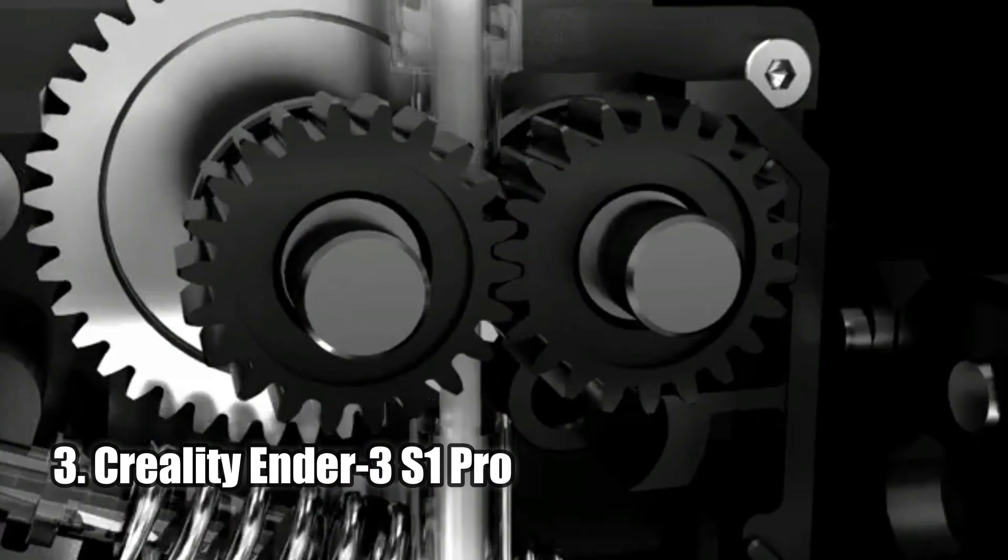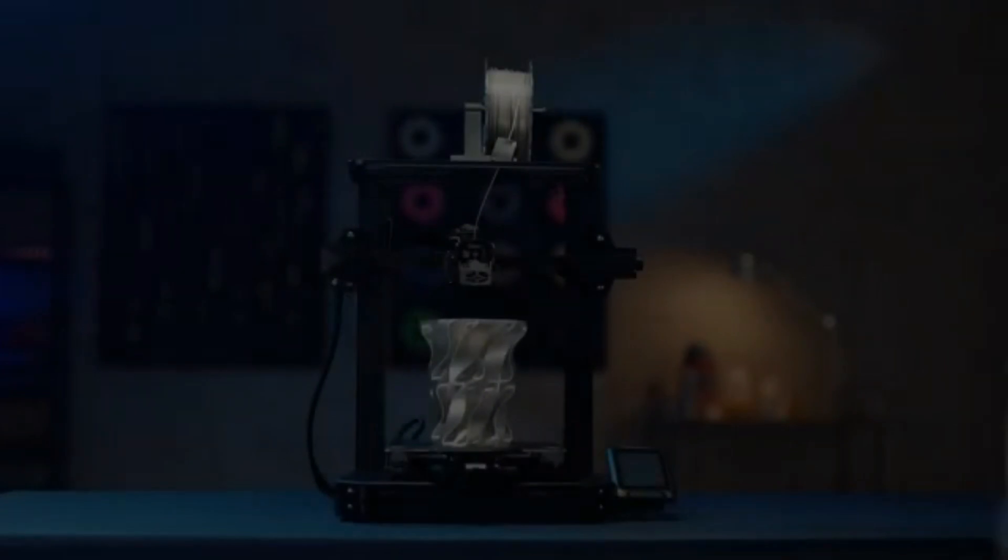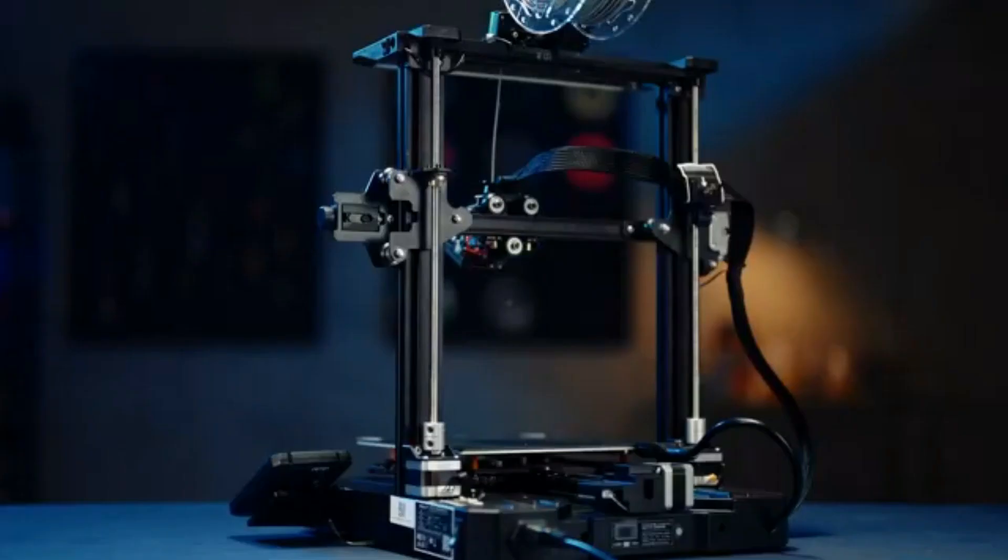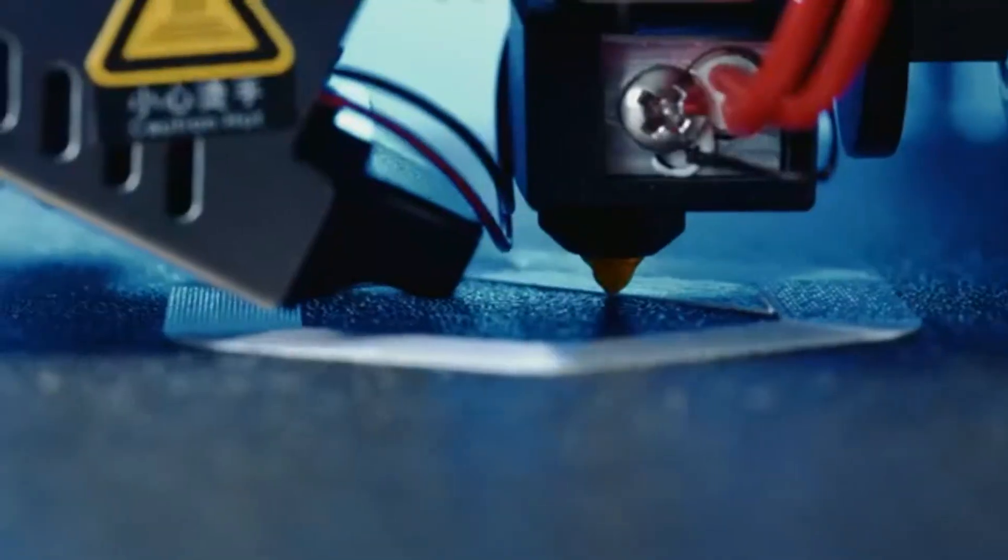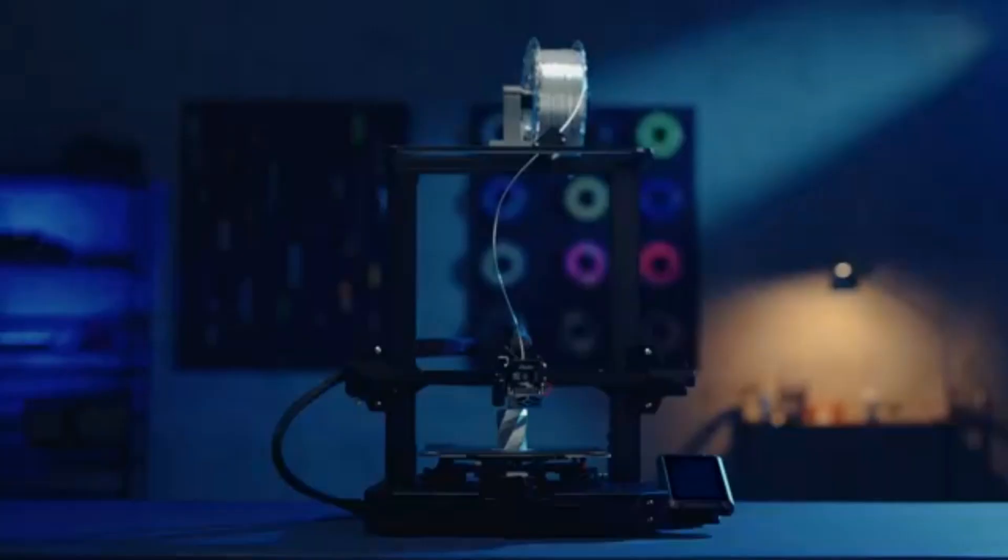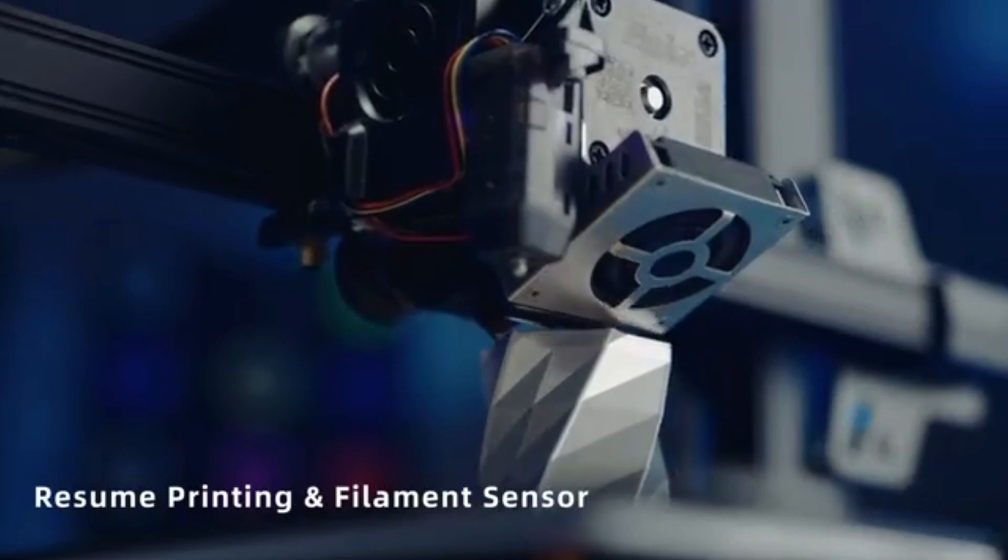Creality Ender 3 S1 Pro. The Creality Ender 3 S1 Pro 3D printer is an amazing machine with many great features. It has a 300 degrees Celsius high-temperature nozzle and a Sprite Full Metal Dual Gear Direct Extruder, which provides smooth feeding when printing with different filaments. It also has CR-touch automatic bed leveling, which can complete quickly and save time.